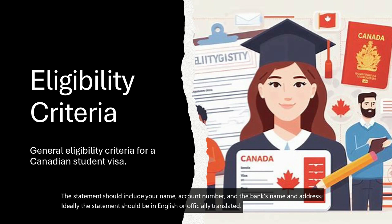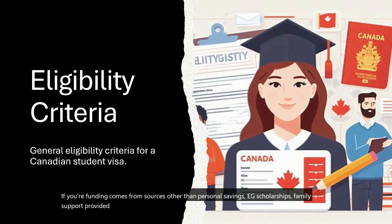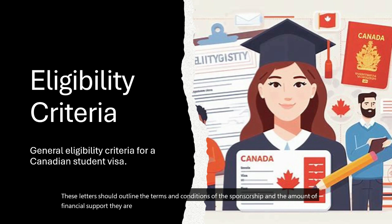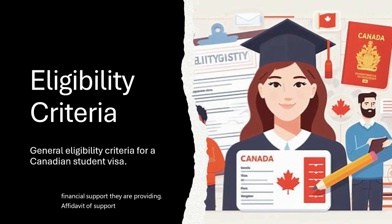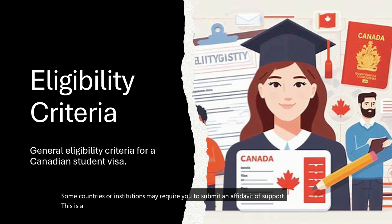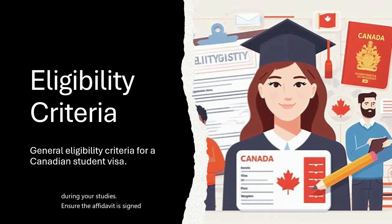Fifth, Sponsorship Letters: if your funding comes from sources other than personal savings — e.g., scholarships or family support — provide official sponsorship letters or documents from your sponsors. These letters should outline the terms and conditions of the sponsorship and the amount of financial support they are providing. Sixth, Affidavit of Support: some countries or institutions may require you to submit an affidavit of support, a legally binding document in which a sponsor guarantees to financially support you during your studies. Ensure the affidavit is signed and notarized.